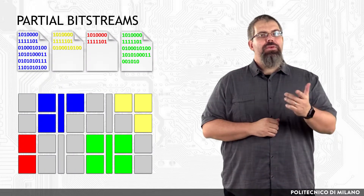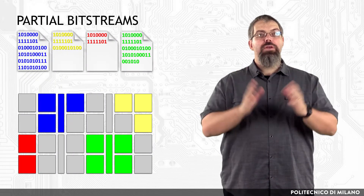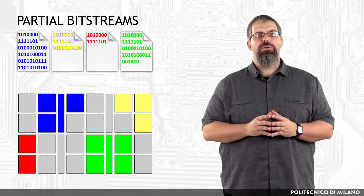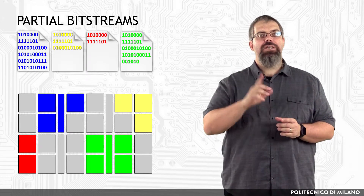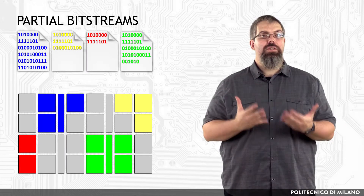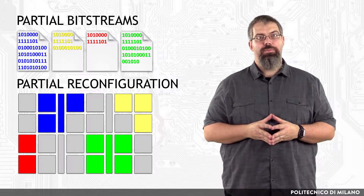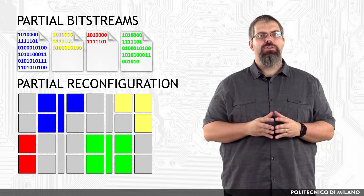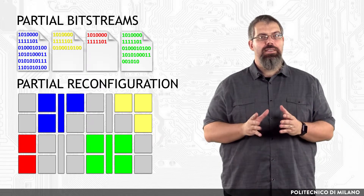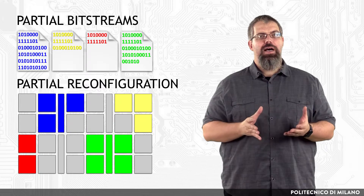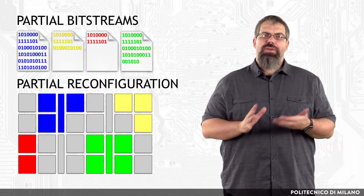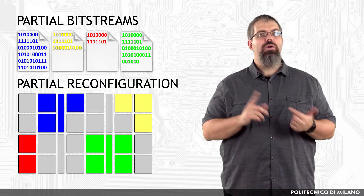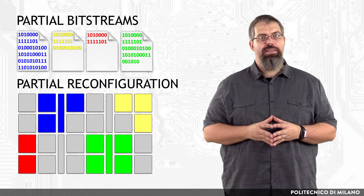If a full bitstream configures the whole configuration memory of the device, a partial bitstream configures only a portion of it. Partial bitstreams are used in what is known as partial reconfiguration, which is useful for applications that require loading different designs into the same area of the device, or the flexibility to change portions of the design without having to reset or completely reconfigure the entire device.